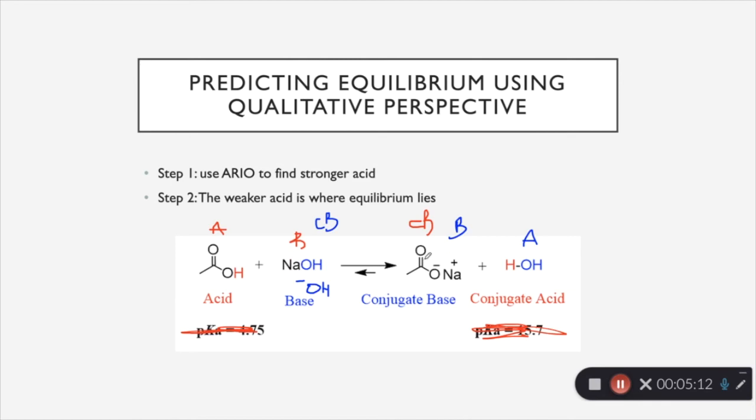So over here, this conjugate base was also on an oxygen, but it has resonance. So remember, this conjugate base is going to be more stable, which means that this acid is going to be stronger. And this conjugate base is not as stable, meaning that water is going to be the weaker acid.